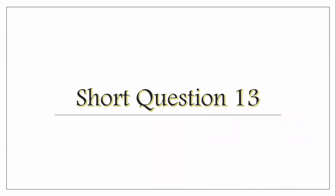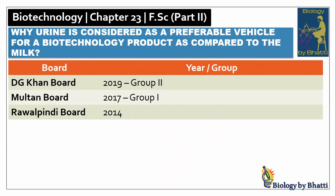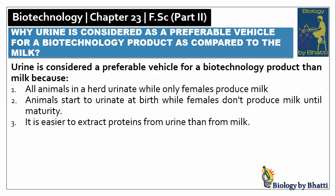Short question number thirteen: Why is urine considered a preferable vehicle for biotechnology products compared to milk? Past paper references: DG Khan board 2019 group 2; Multan board 2017 group 1; Rawalpindi board 2014. There are three reasons: first, all animals urinate, while milk is produced only by female animals; second, animals start urinating from birth, while milk production does not start until adulthood in females; third, milk is a complex medium, making it harder to isolate proteins, whereas proteins are easier to isolate from urine.